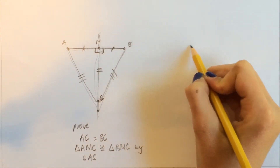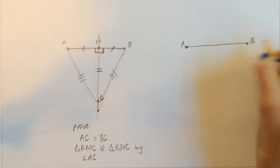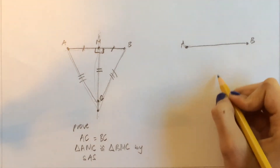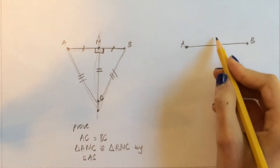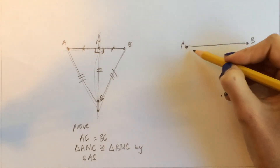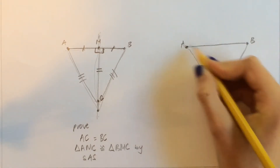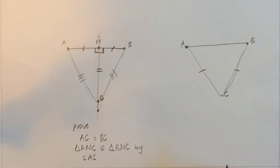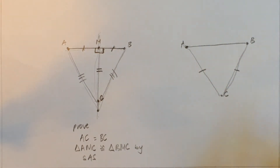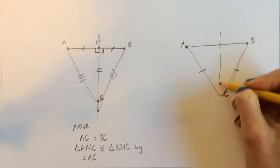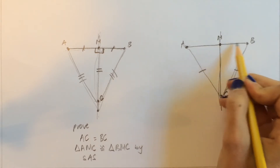We have the same segment AB, but now we're proving the other way. We have point C and we want to prove that point C is on the perpendicular bisector of AB. We are given that point C is equidistant from A and from B, so AC is equal to BC. We want to prove that point C lies on the perpendicular bisector of AB. So let's make the bisector of AB — we agree that M is the midpoint, so AM is equal to BM.